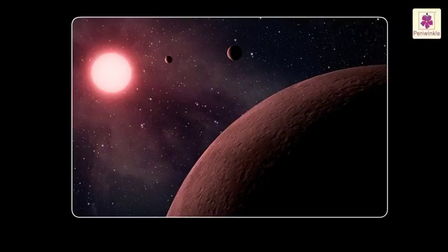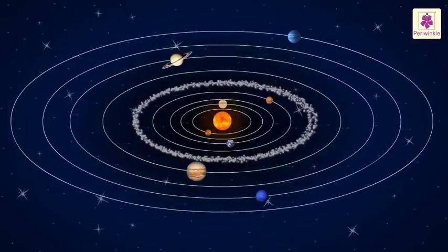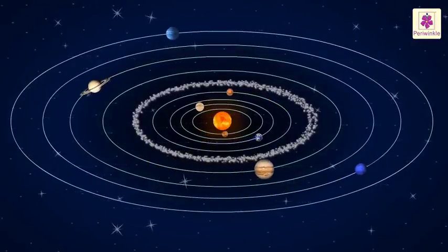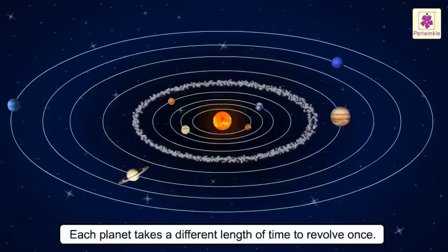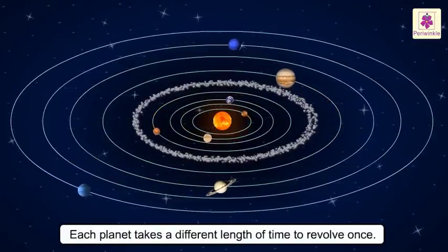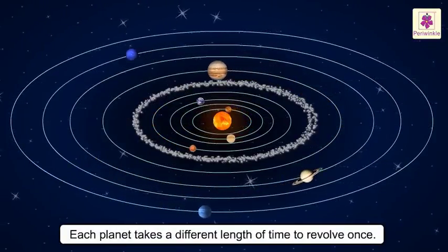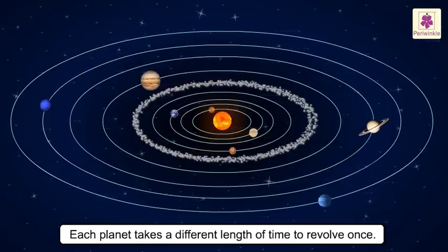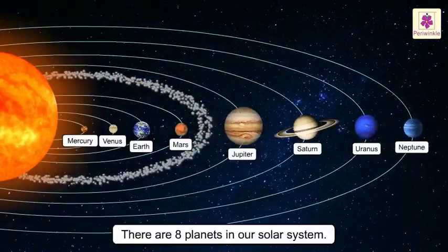We see them shining because they reflect the light of the star around which they revolve. Because they are all at different distances from the Sun, each one takes a different length of time to revolve once. There are eight planets in our solar system.